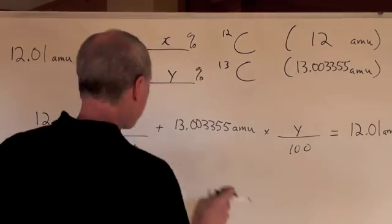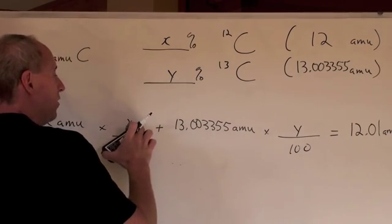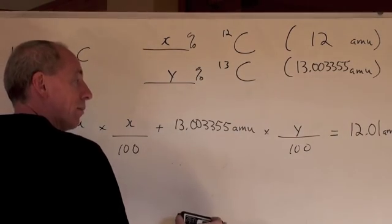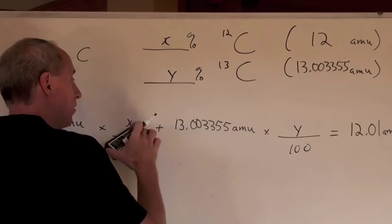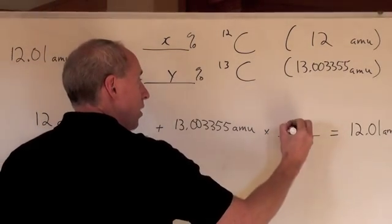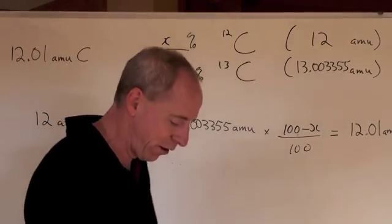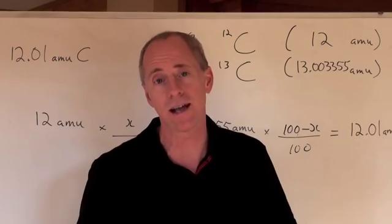Given that, this number and this number have a relationship. This and this both have to equal the number 100 in terms of percent. So whatever x is, y is going to be 100 minus that number, and now you've got a similar variable for both of those and you can attack the question.